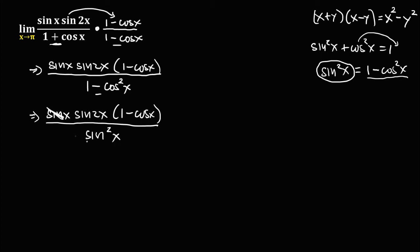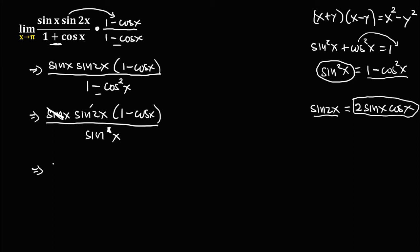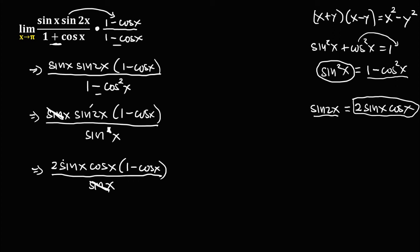We can cancel one sine(x) from the numerator and denominator. Then rewrite sin(2x) using the double-angle identity: sin(2x) equals 2 sin(x) cos(x). Replace sin(2x) with 2 sin(x) cos(x). We now have 2 sin(x) times 1 minus cosine(x) over sin(x). Cancel this sine(x).